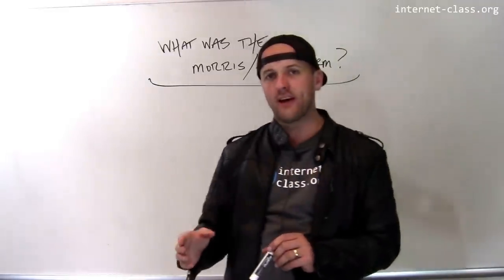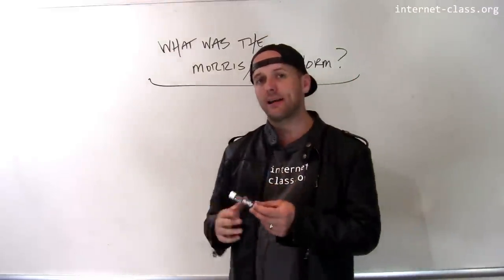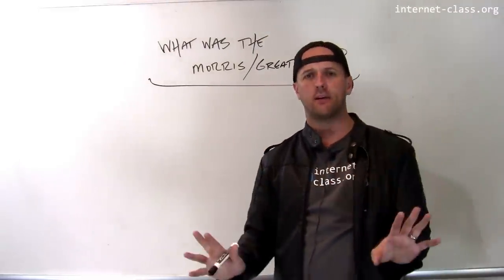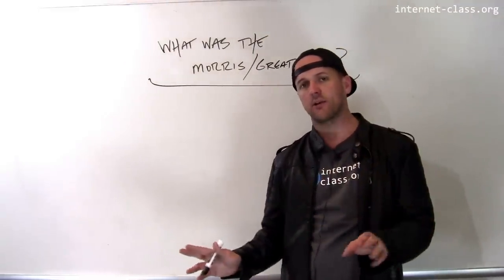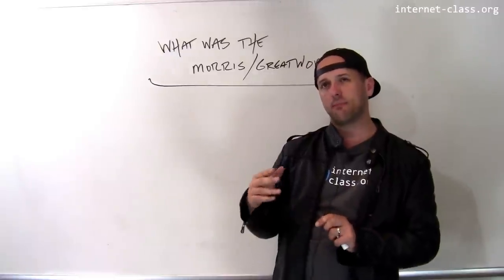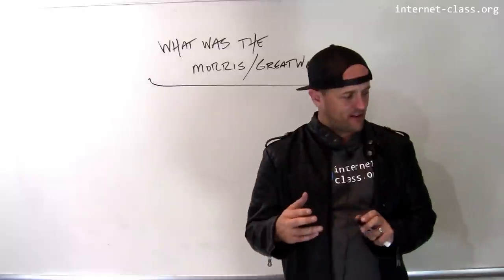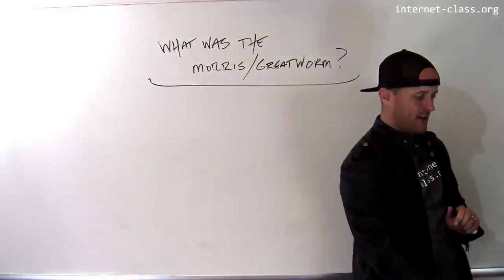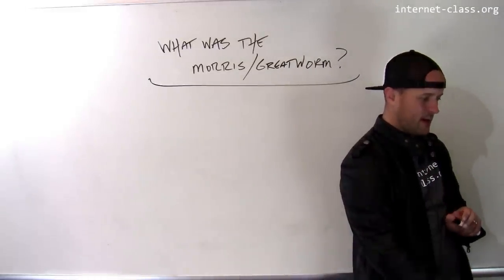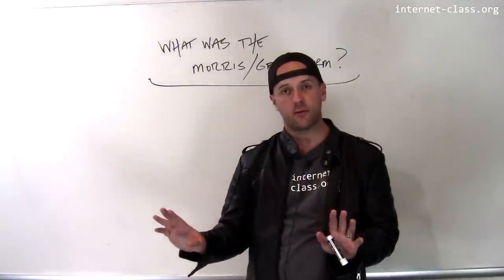A student at Cornell named Robert Morris was trying, he claims, to map the internet. This was very early on, the early internet. There were, I think at that time, about 60,000 machines that were connected to the internet. So the internet was fairly small.